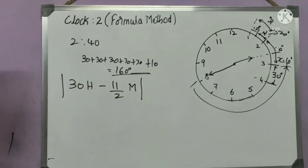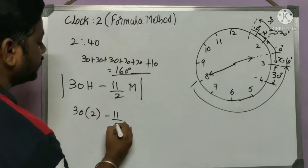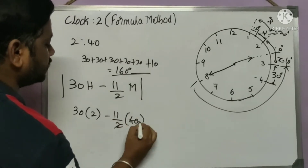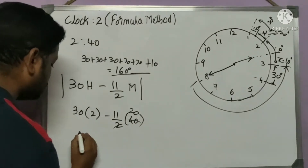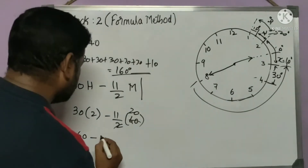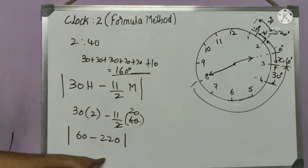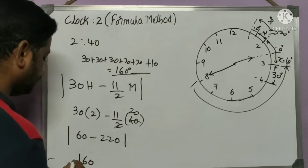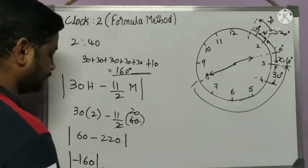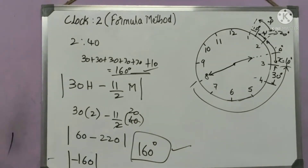Now checking with the formula: 30 × 2 − (11/2) × 40 = 60 − 220 = −160. Taking the magnitude, the answer is 160 degrees — the same as the traditional method. Both methods give the same answer.